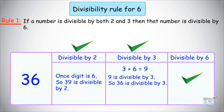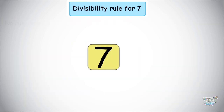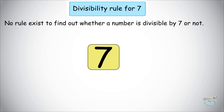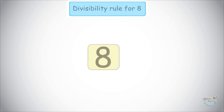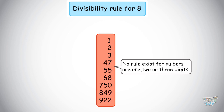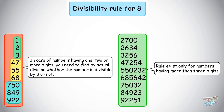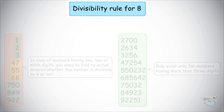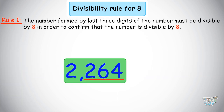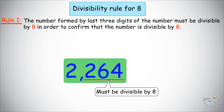So friends, we have learned the divisibility rule for 5 and 6. Now let's learn about 7 — there is no rule to find out whether a number is divisible by 7. So let's move on to 8. For numbers that have 1, 2, or 3 digits, no rule exists and you need to use actual division. The rule only exists for numbers with more than 3 digits: the number formed by the last 3 digits must be divisible by 8.